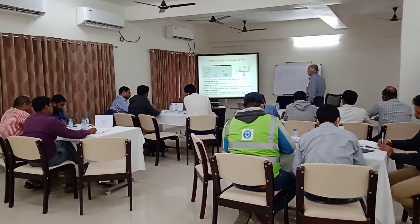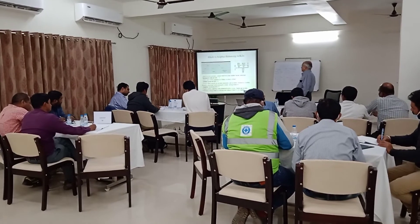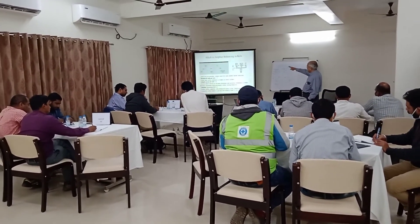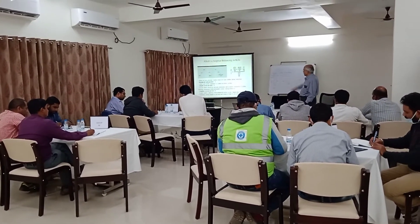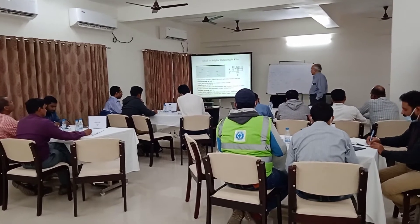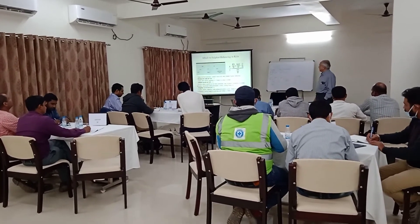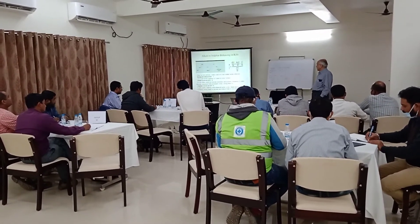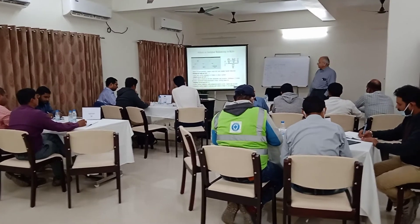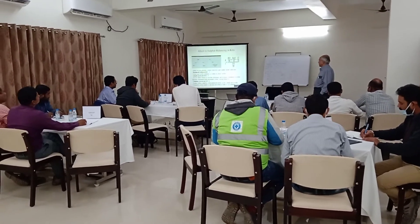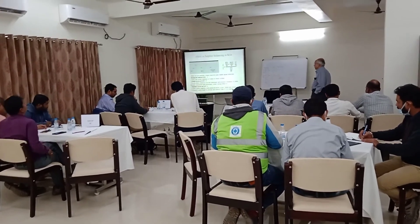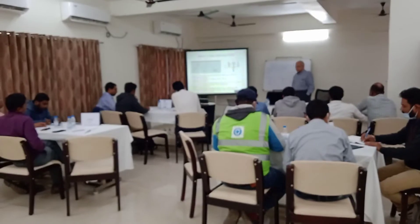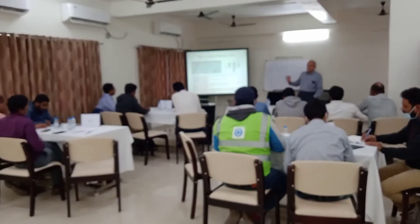For alkali to sulfur balancing, the formula is: k2o divided by 94, plus na2o divided by 62, minus chloride divided by 70 — the entire thing divided by SO3 divided by 18. Now, how to interpret these figures?